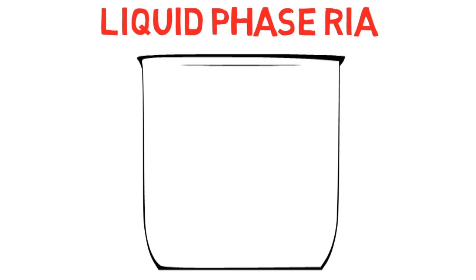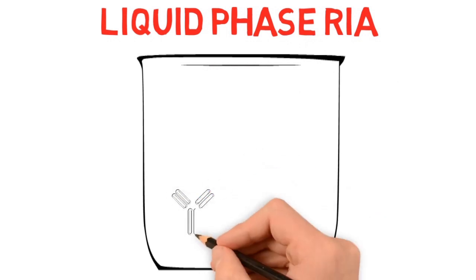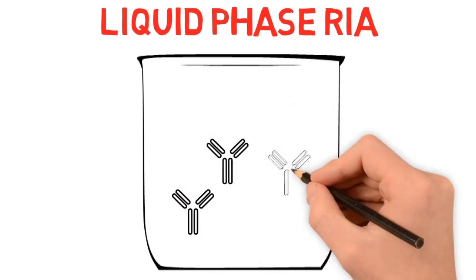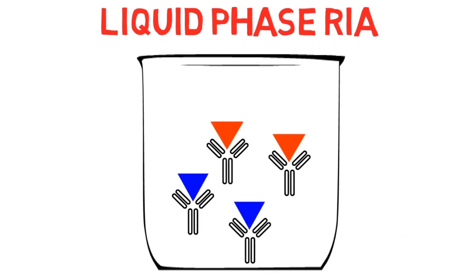In liquid phase radioimmunoassay, antibodies are not coated. After antigen-antibody complexes are formed, it is precipitated by second antibody against the first one, and then radioactivity is measured.